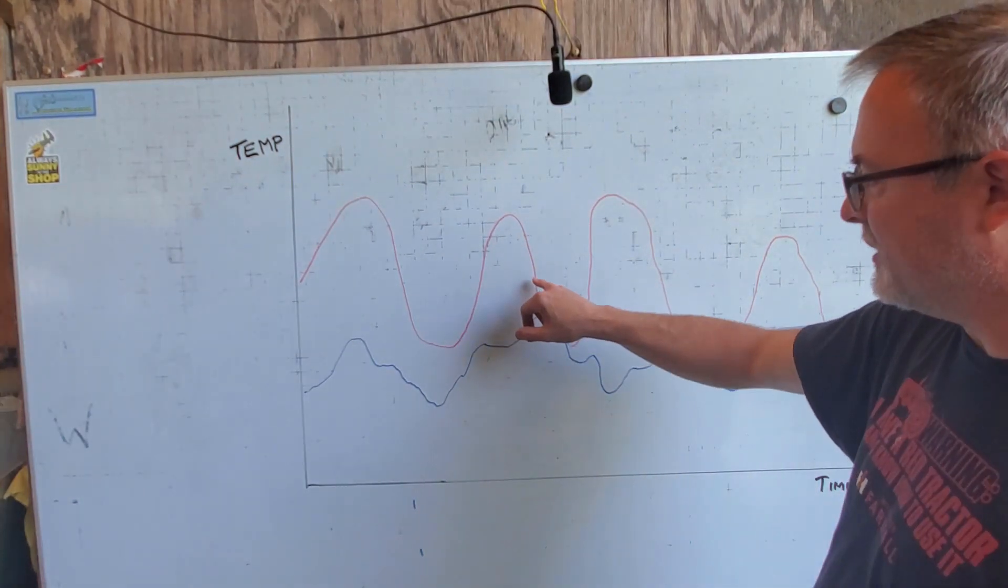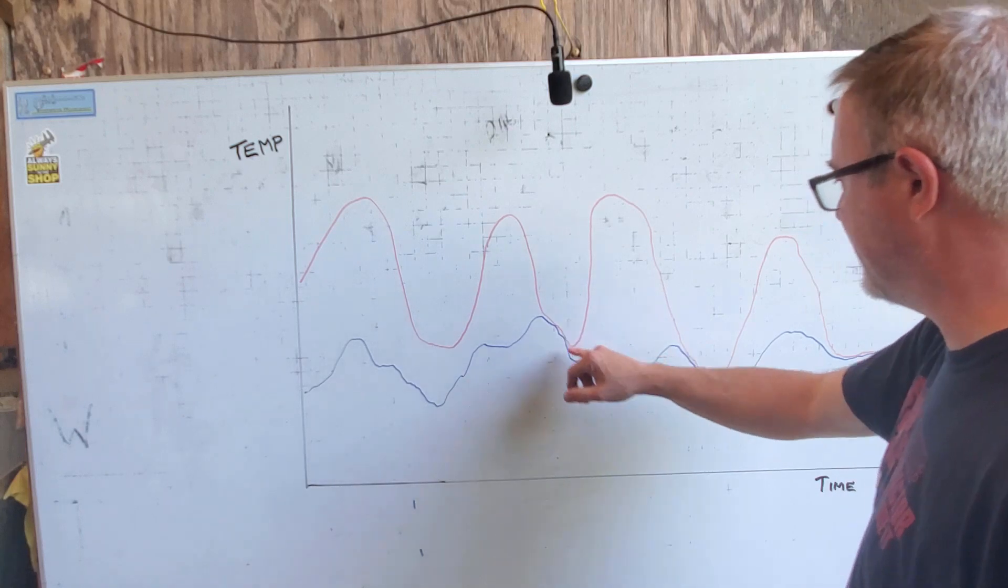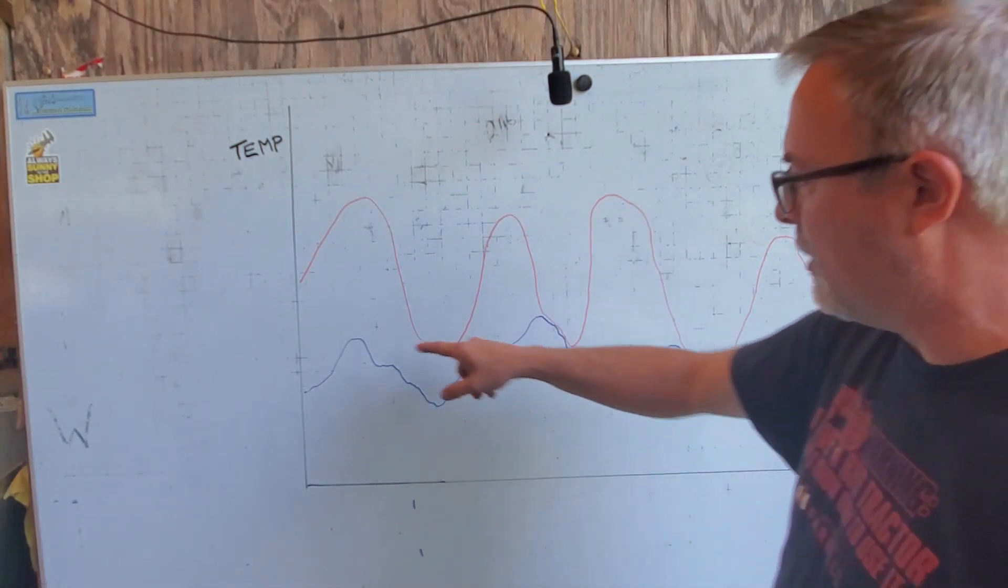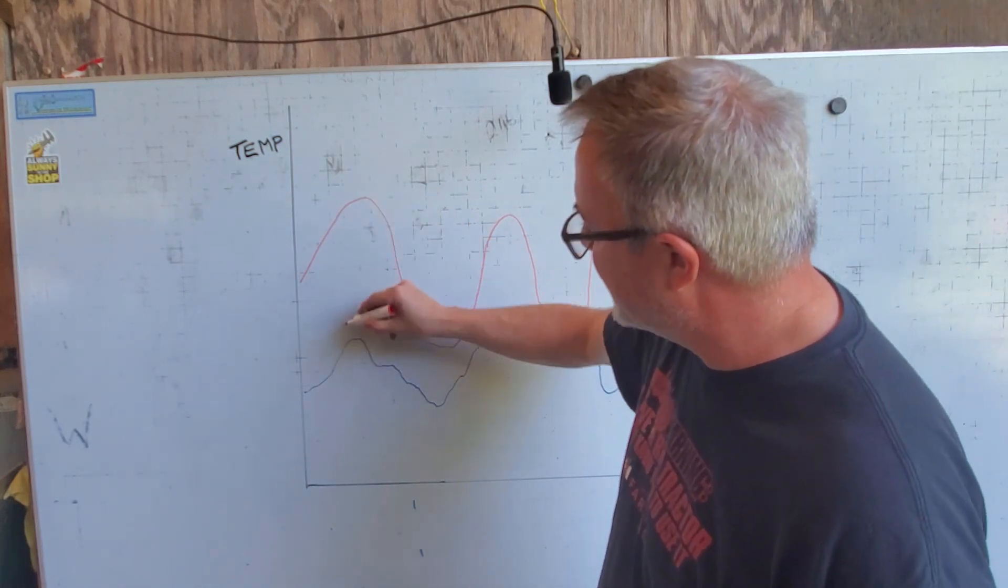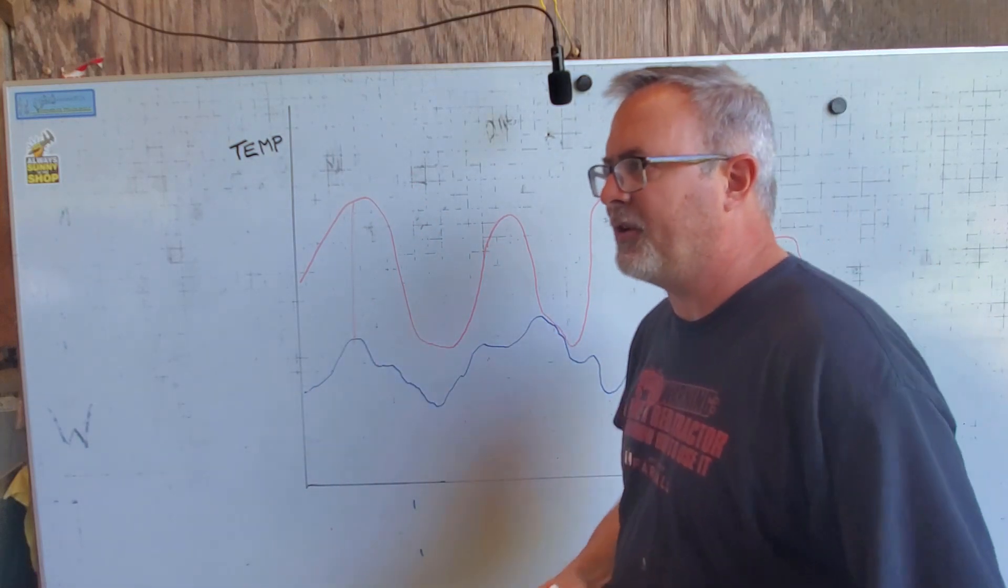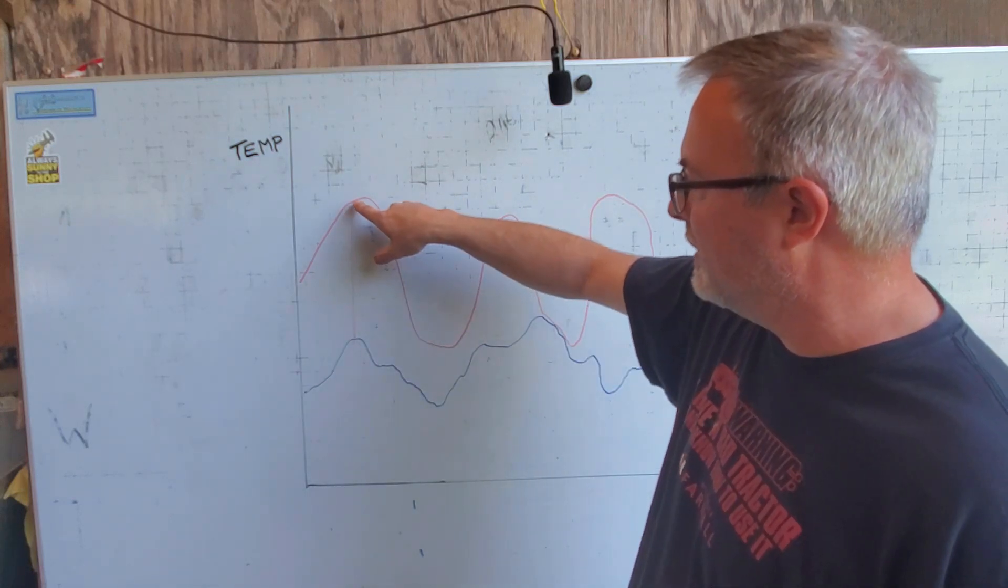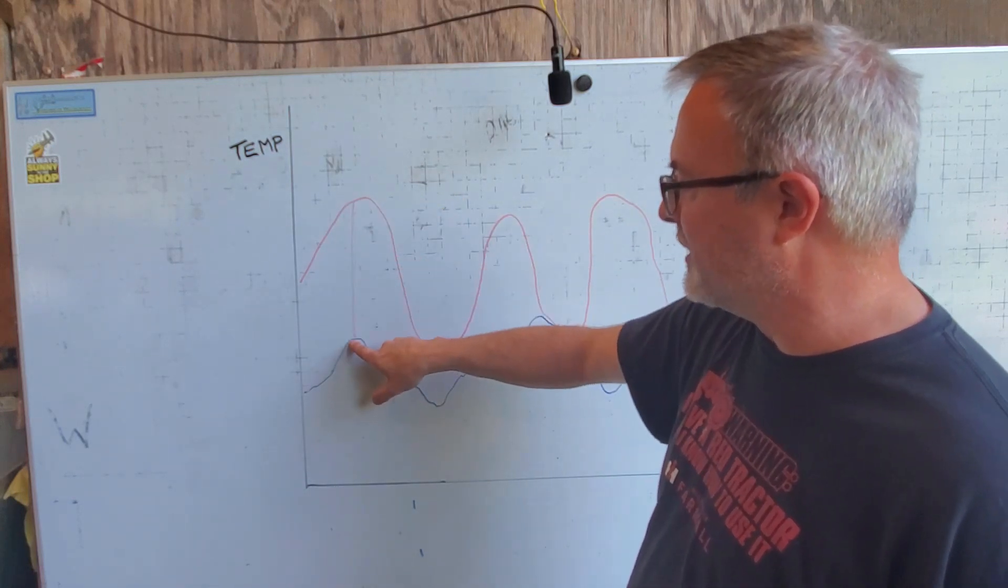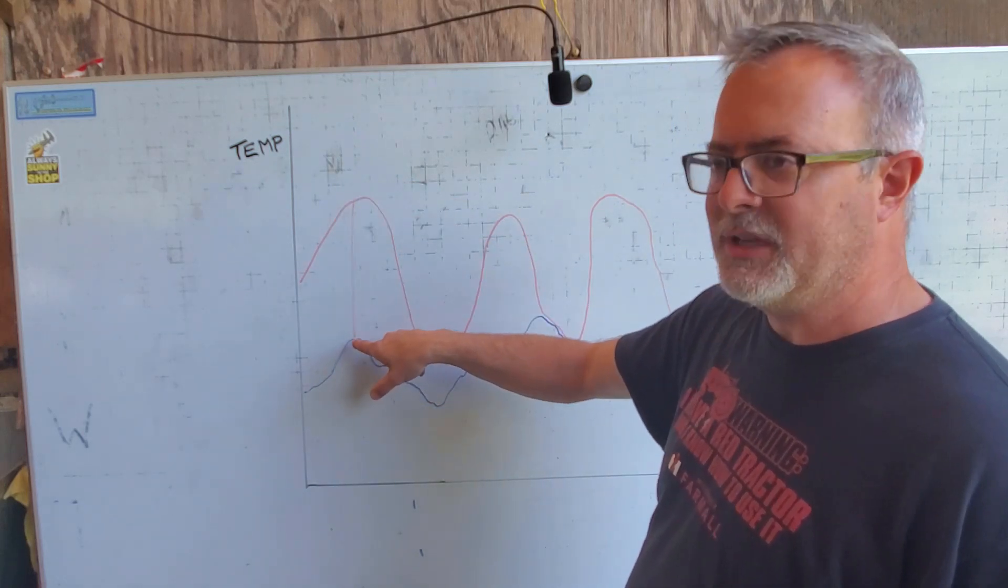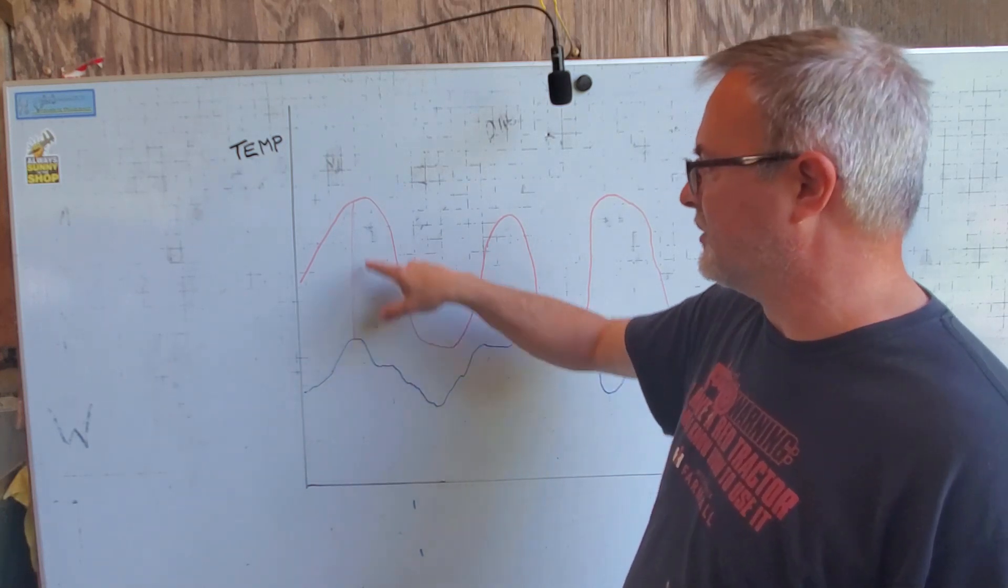Because what happens is when the temperature and the dew point are at the same level, the air is 100% saturated. So this temperature line will never go below the dew point line. Now, what's this gap in here? This gap in here is a visual indicator of the relative humidity. It's the amount of moisture that the air can hold at any given temperature.